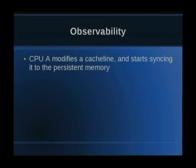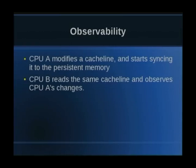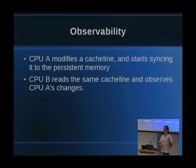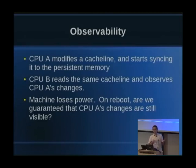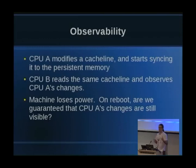There are two distinct kinds of observability, and this problem demonstrates it. CPU A modifies a cache line. It says to the kernel: start syncing that out to the persistent memory. But right now, the cache line is only dirty in CPU A's cache. CPU B does a read to that cache line, and CPU A hands the ownership over to CPU B — so CPU B has observed CPU A's changes. Now the machine loses power. On reboot, are we guaranteed that CPU A's changes are still visible? CPU B got to see them and may have done something based on that.